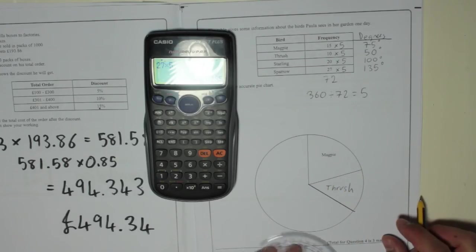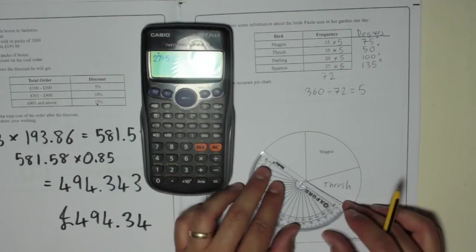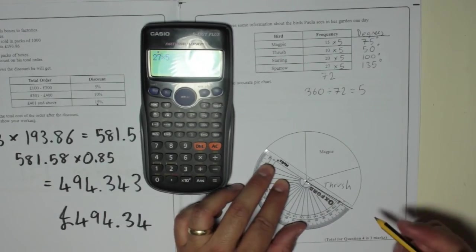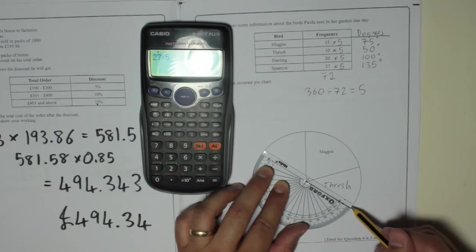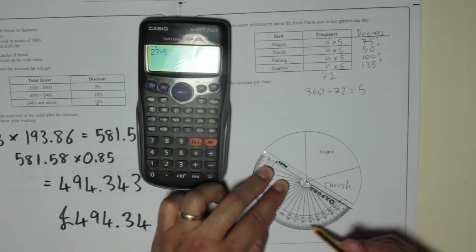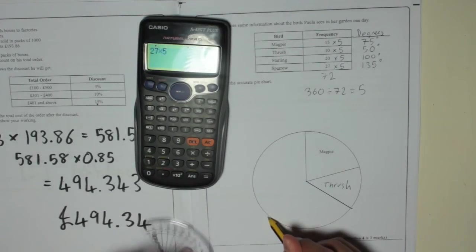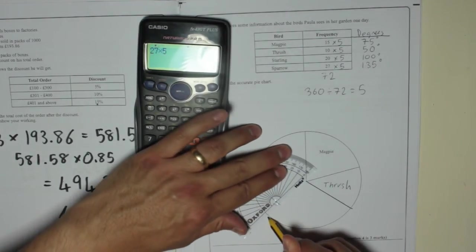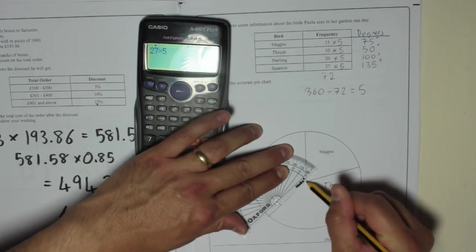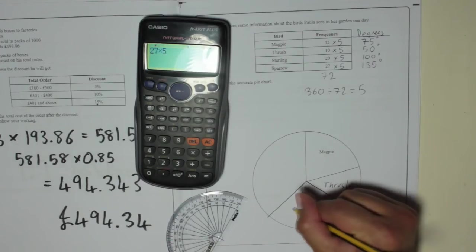Then the next one, starling, is 100 degrees. Again, line up with the last one. Get zero on the last line. And 10, 20, 30, 40, 50, 60, 70, 90, 100. Starling.